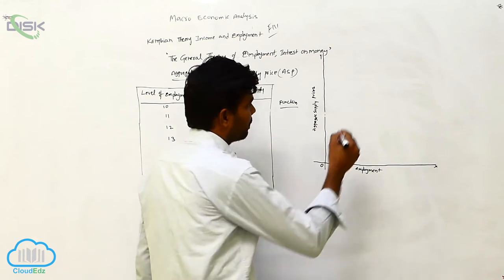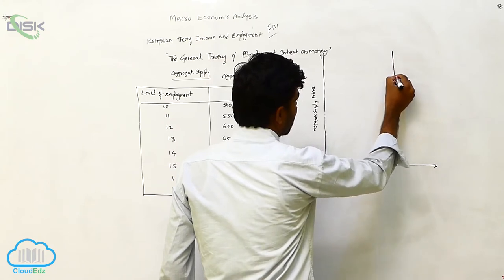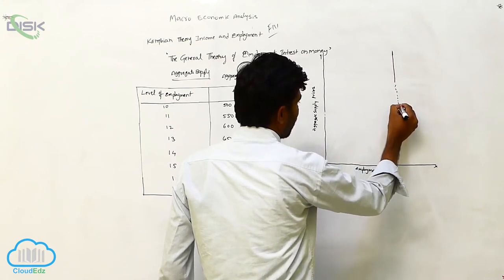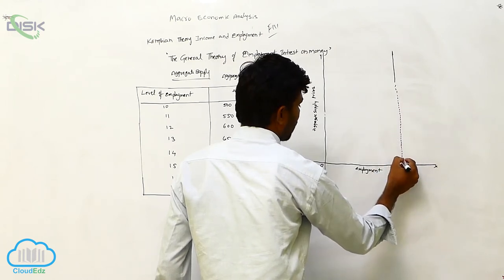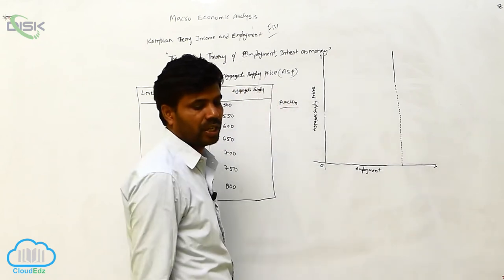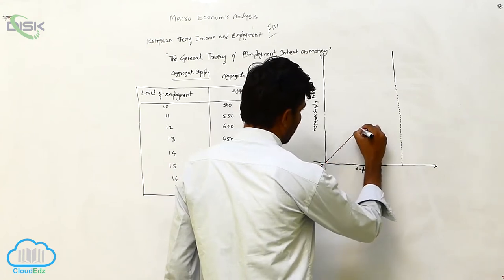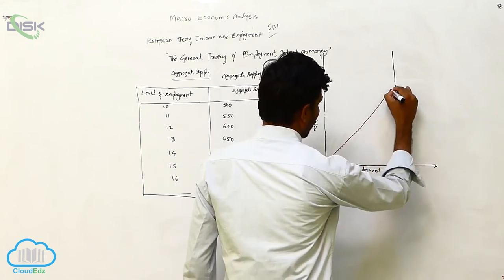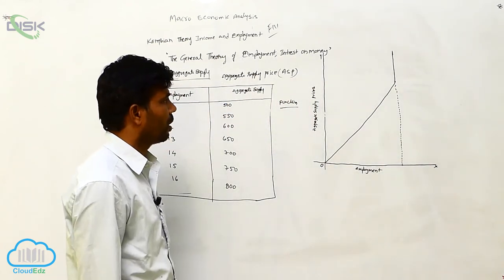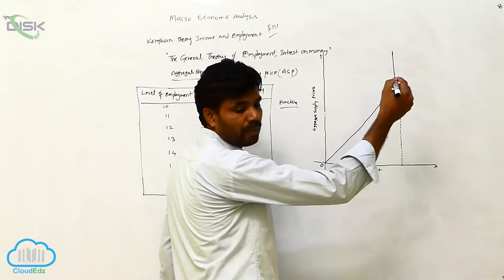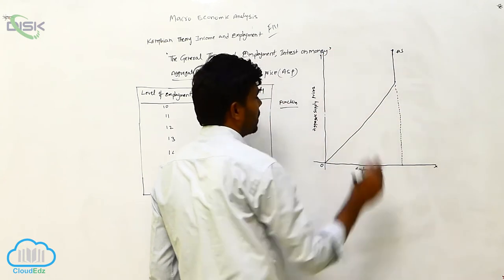Suppose I am saying, this is a curve starting like this. From this stage, the curve will be like this. This is the aggregate supply curve. Which is the aggregate supply? This is the aggregate supply.